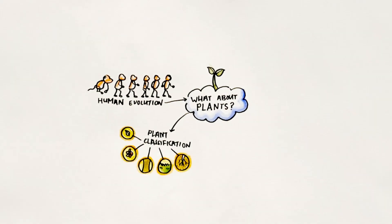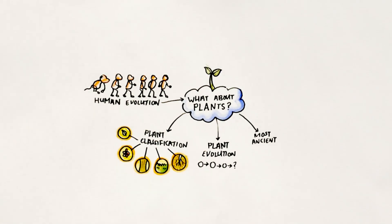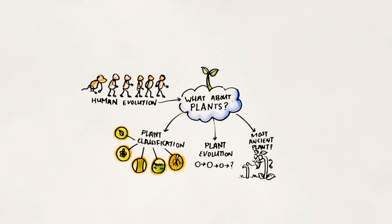How are plants classified? How do plants evolve? Which are the most ancient plant species?